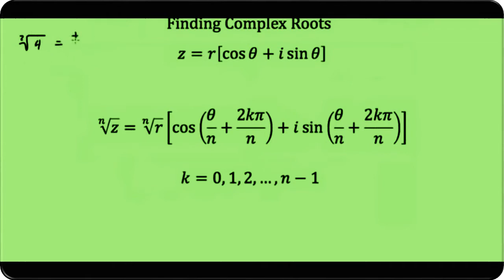if we have the nth root, we have n possible solutions. So if I'm taking the fourth root of z, I'm going to have four solutions. If I'm taking the square root of z, I'm going to have two solutions.